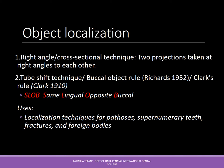Moving on to object localization — a relatively new topic for those just starting dental radiology. Object localization has two different techniques: number one is the right-angle or cross-sectional technique, where two projections are taken at right angles to each other; and number two is the tube shift technique, or buccal object rule, given by Richard in 1952 or Clark in 1910, with the famous mnemonic SLOB — Same Lingual Opposite Buccal.